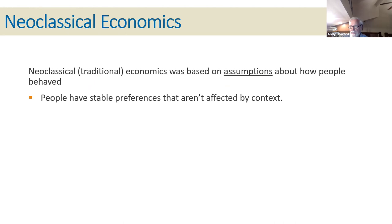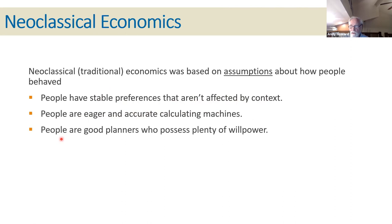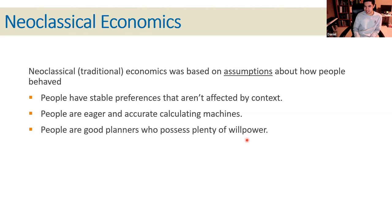But these assumptions were questioned. One assumption, for example, is that people have stable preferences that aren't affected by context — but we found context does affect them. Traditional economics believed that people are eager and accurate calculating machines — we know that's not true; people are terrible at math and they don't like to do it. Traditional economics assumed people are good planners who possess plenty of willpower — well, that's almost laughable. People are terrible planners and they've got almost no willpower at all.